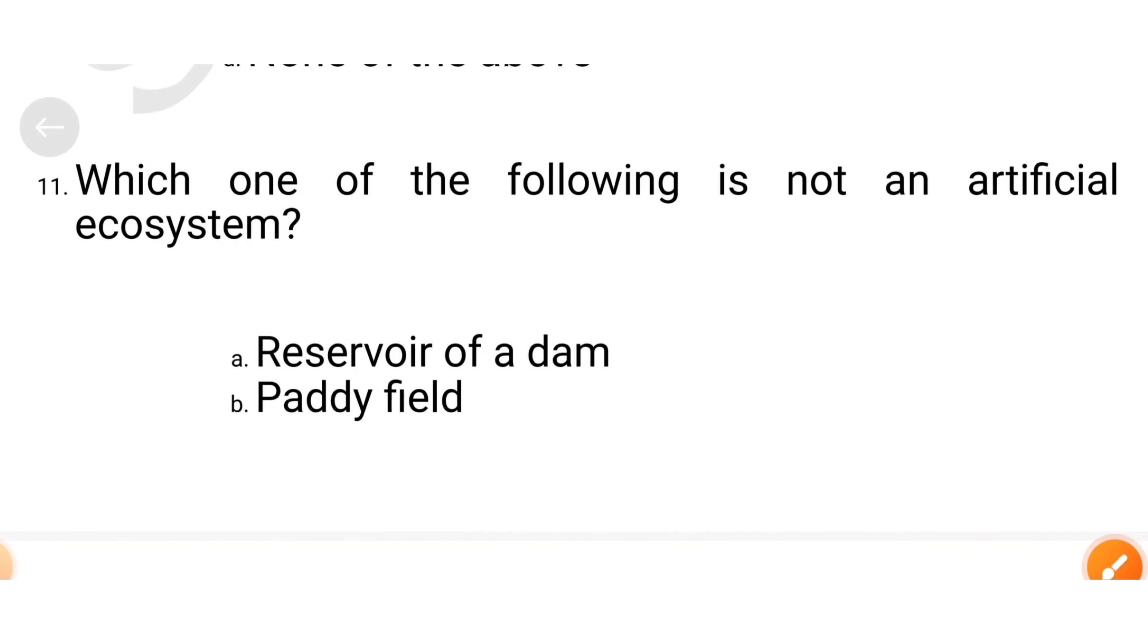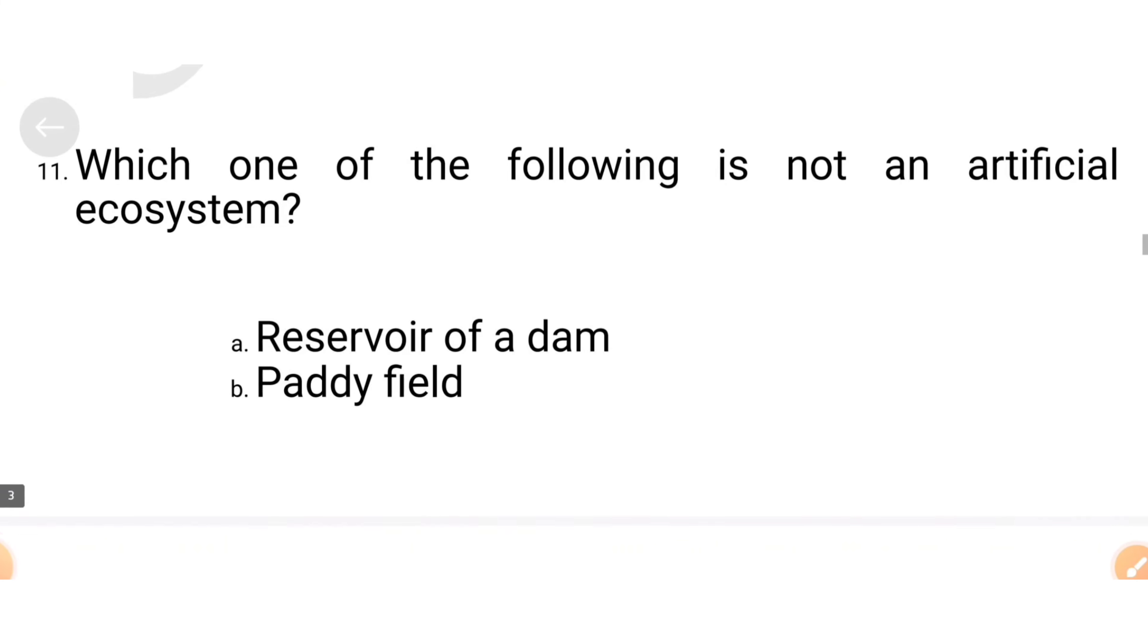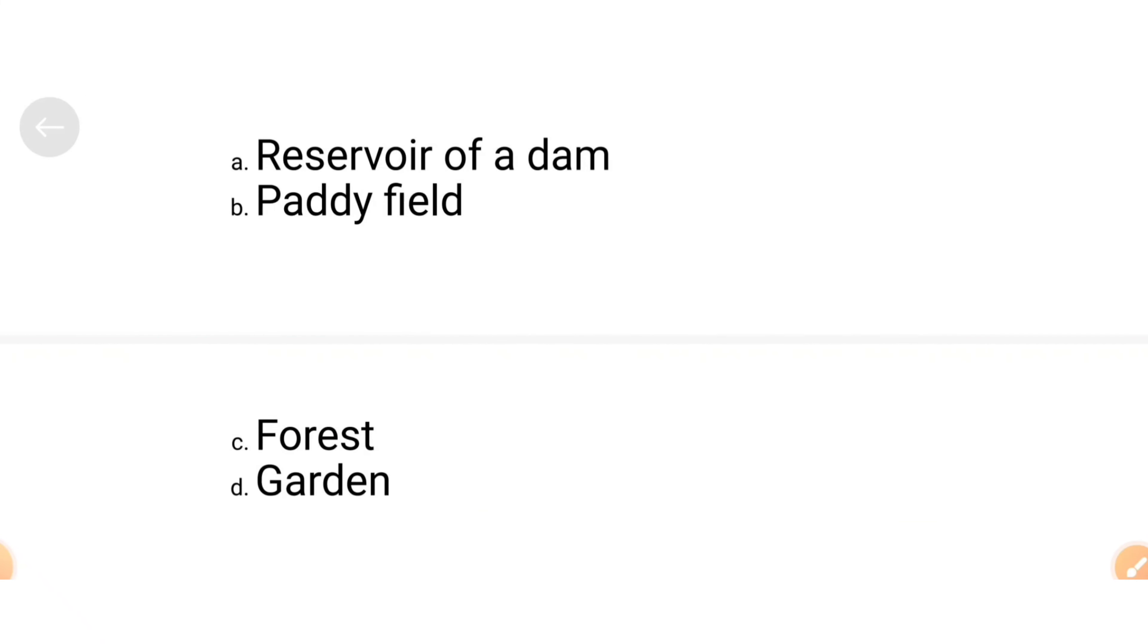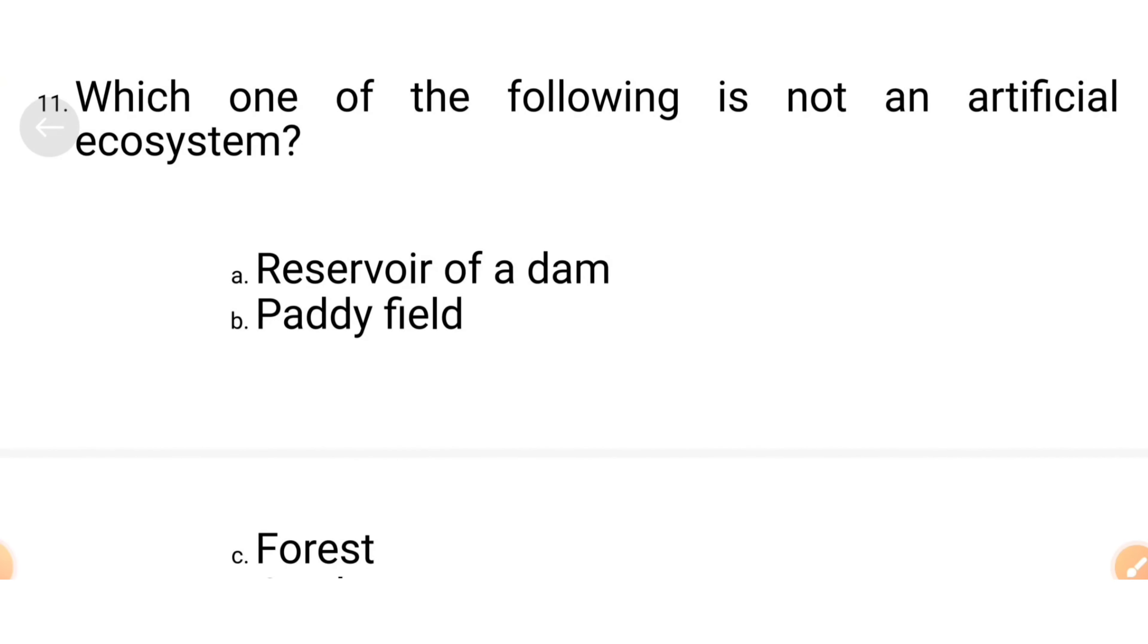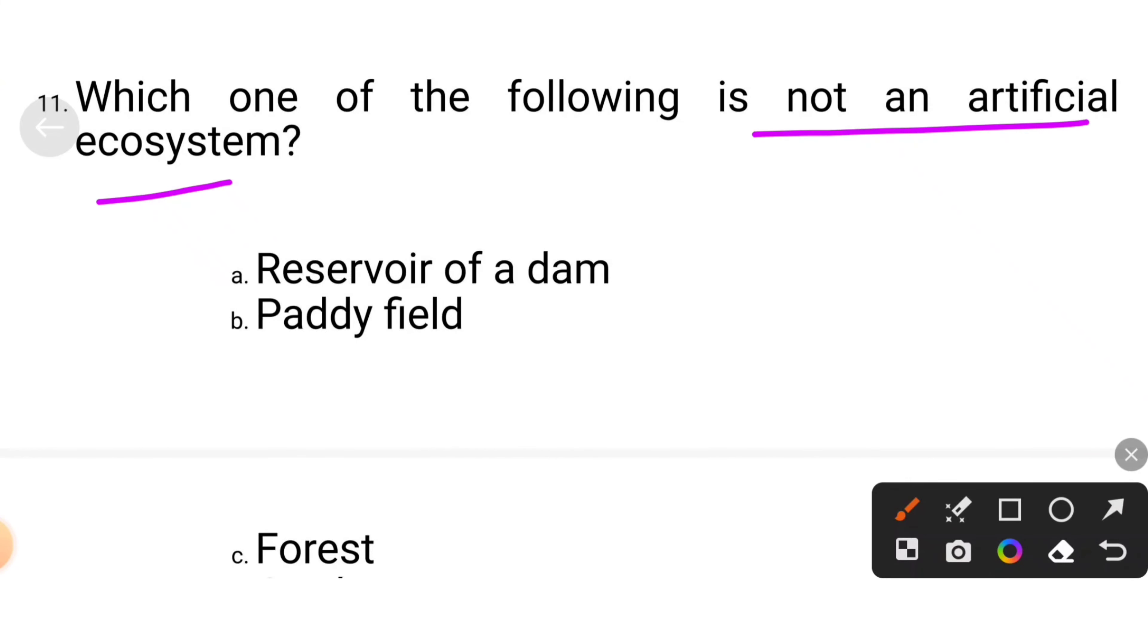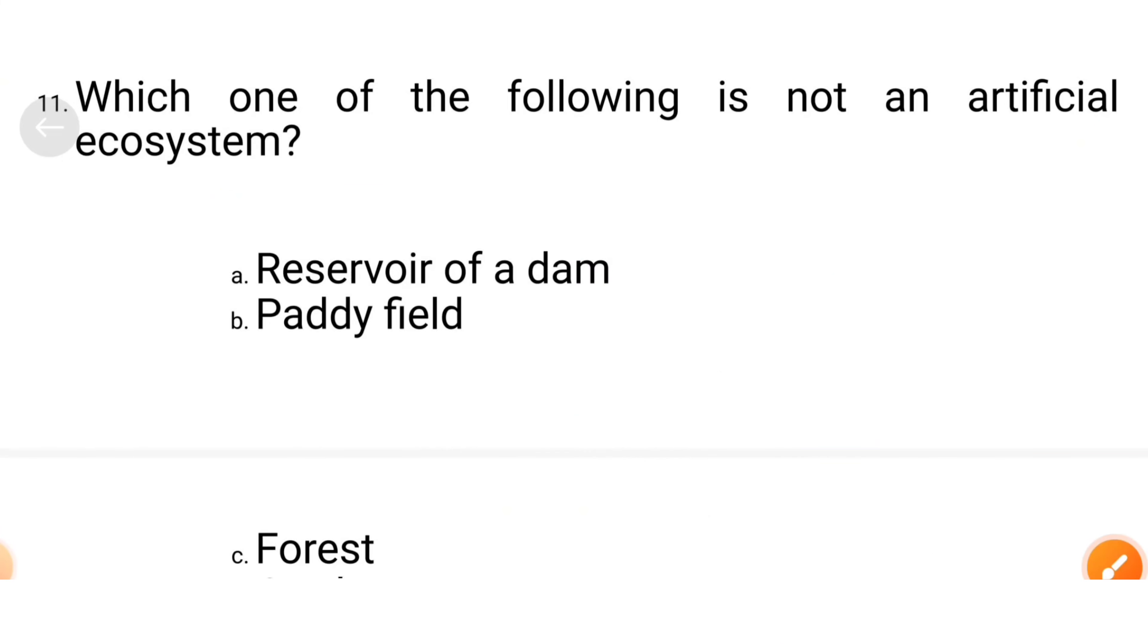Which one of the following is not an example of an ecosystem? Reservoir of a dam, paddy field, forest or garden. Not an artificial ecosystem. So reservoir of a dam, it is artificial. Paddy field is also artificial. What is the natural? We have the natural here. What is the option? Forest.